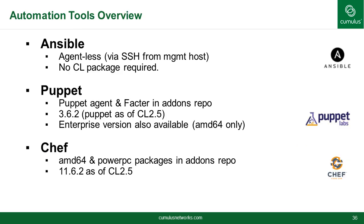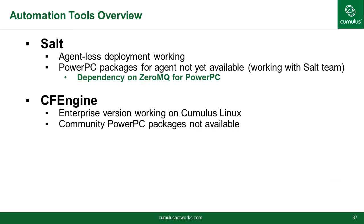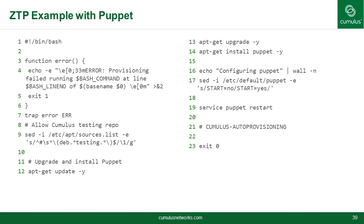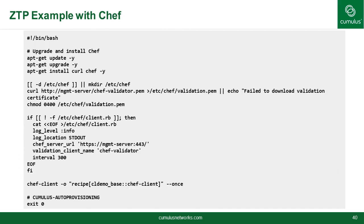Here are some examples of the automation tools available — not from Cumulus Linux, but used by many network administrators: Ansible, Puppet, Chef, SALT, and CFEngine. Here's one way of doing ZTP with Ansible — the syntax will vary, but this is one example. The next slide shows a different example with Puppet, and the last one is a ZTP example with Chef. It's just a different way of writing code, but they all do the same thing.